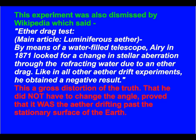This is a gross distortion of the truth. That he did not have to change the angle proved that it was the ether drifting past the stationary surface of the Earth.